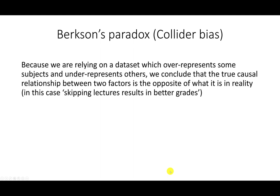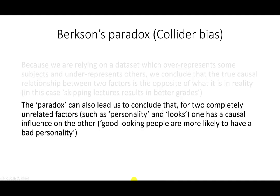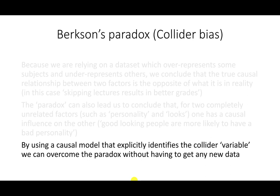In conclusion, this paradox occurs when we rely on a dataset that over-represents some subjects and under-represents others, and we end up concluding that the true causal relationship between two factors is the opposite of what is actually the case. In the lecture-skipping case, there was a positive relationship between skipping lectures and getting poorer grades, but Bergson's paradox reversed that. In the cases of personality and looks, and smoking and COVID-19, the paradox led us to conclude that two unrelated factors have a causal influence on each other. The key insight is that by using a causal model that explicitly identifies the collider variable, we can overcome the paradox without having to get any new data.